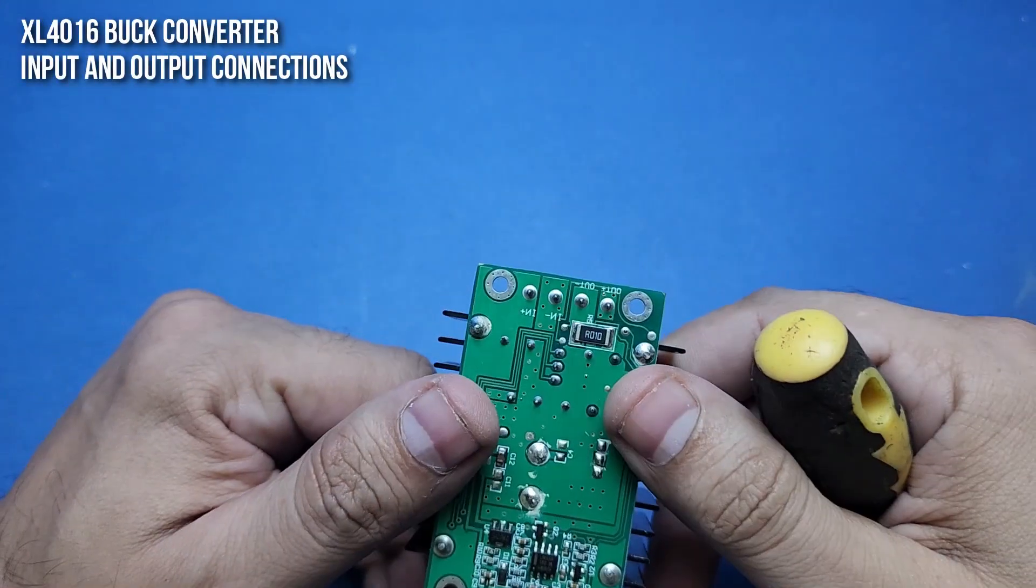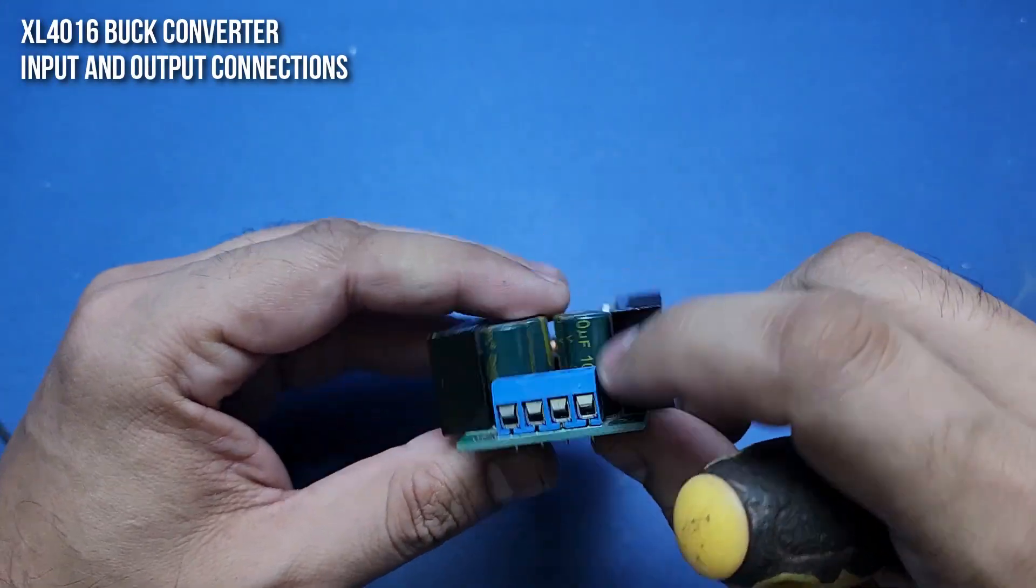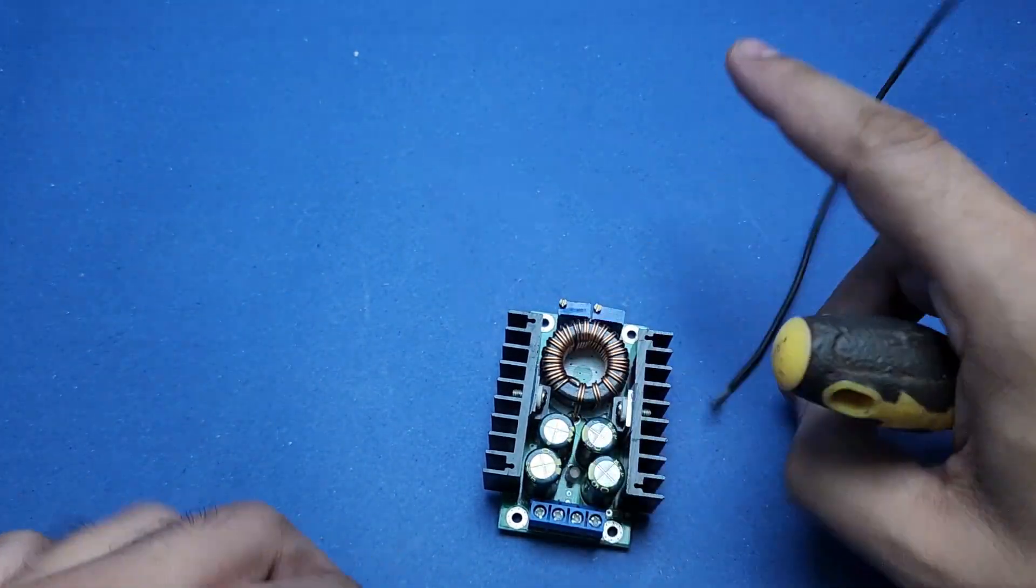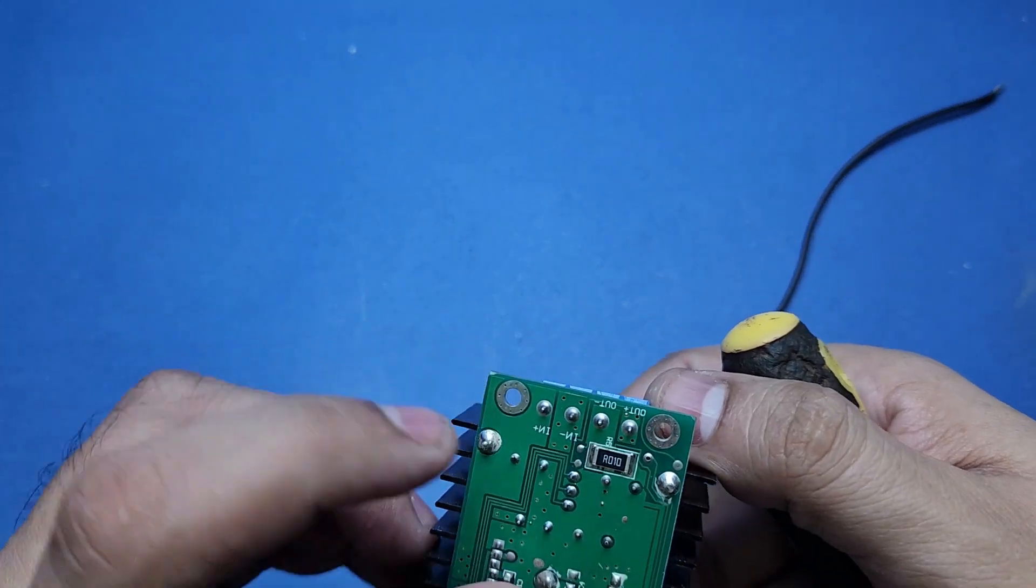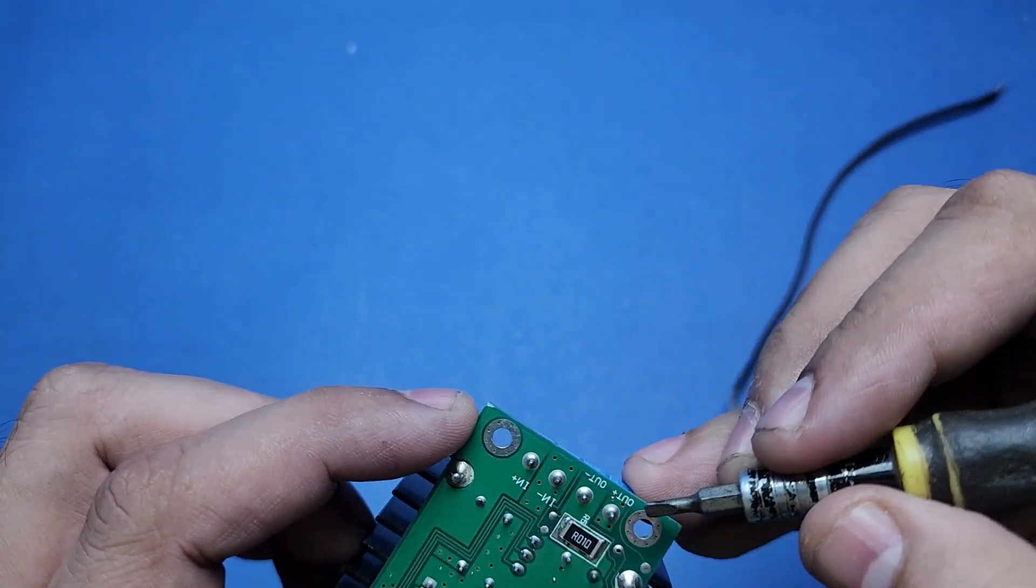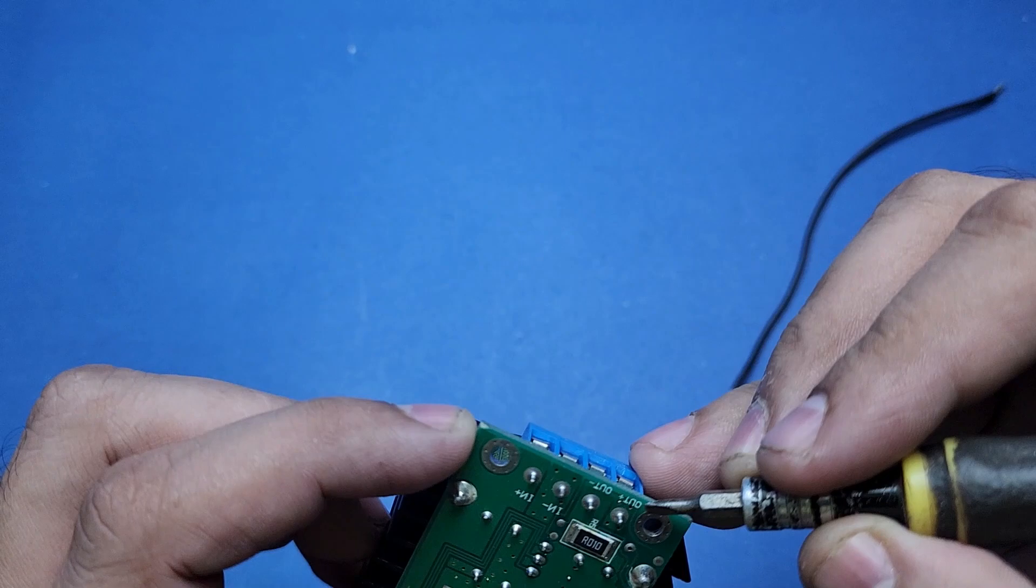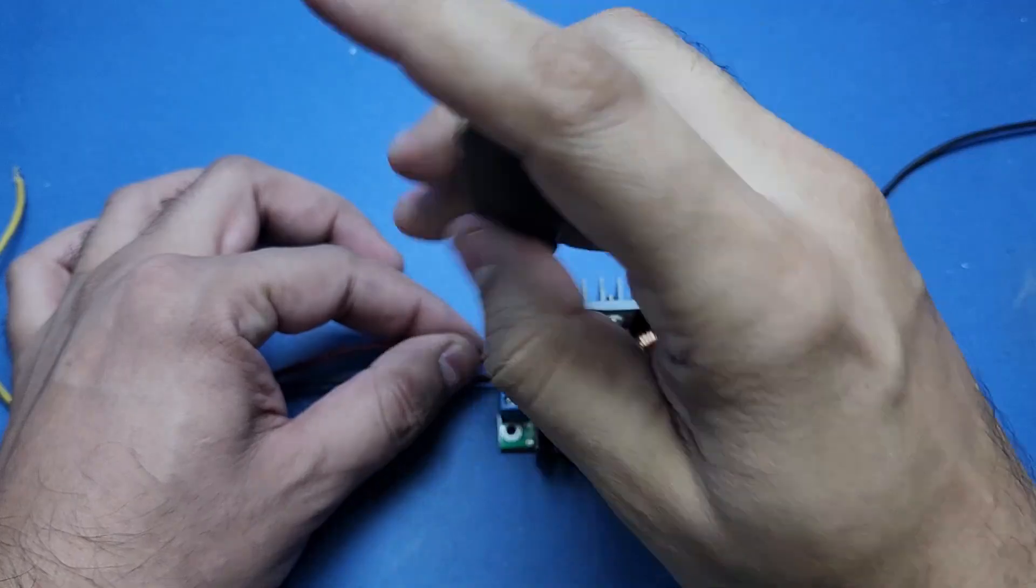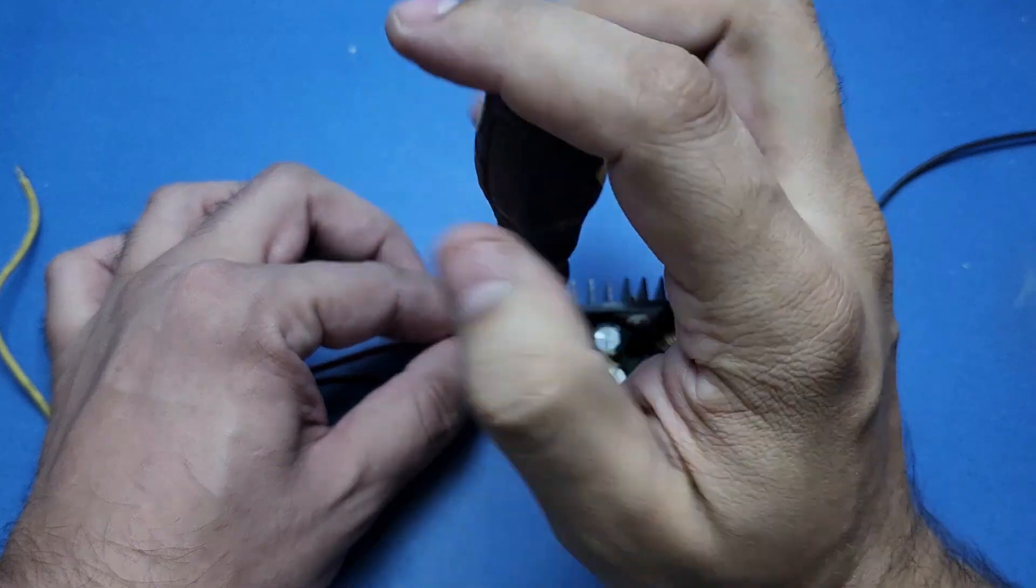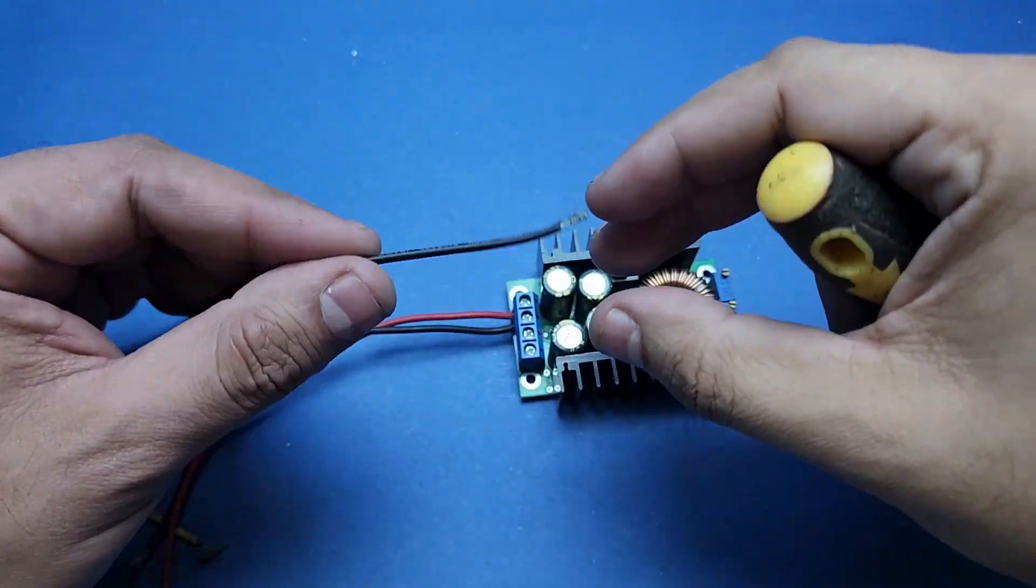The word 'IN' is printed on the input side of the connectors on both sides of the PCB. Similarly, on the output side, the word 'OUT' is printed on both sides. The polarity of the connectors is also mentioned as positive and negative signs.